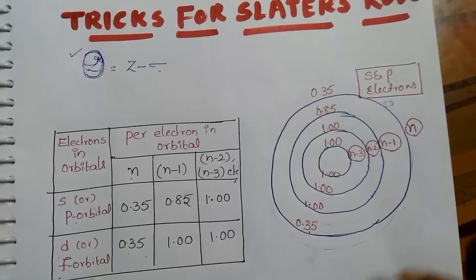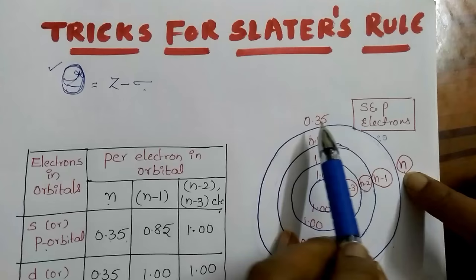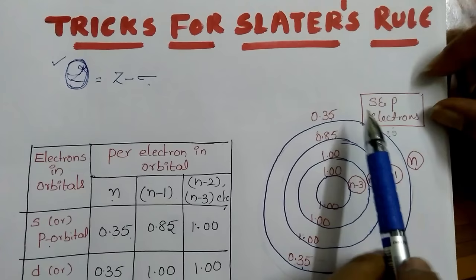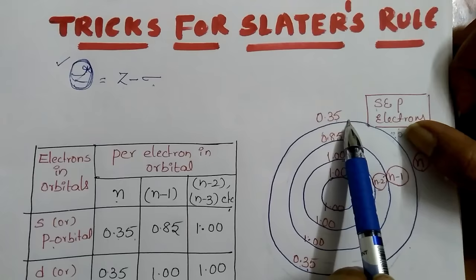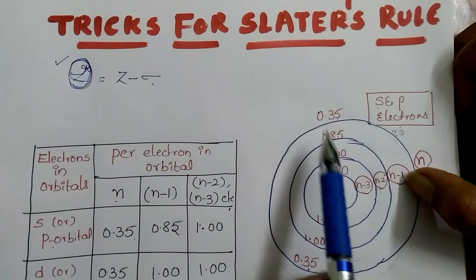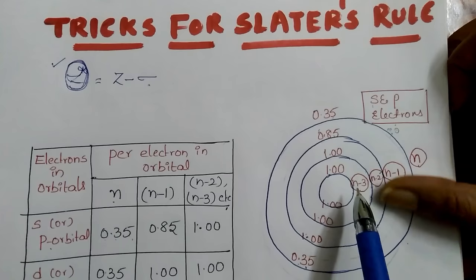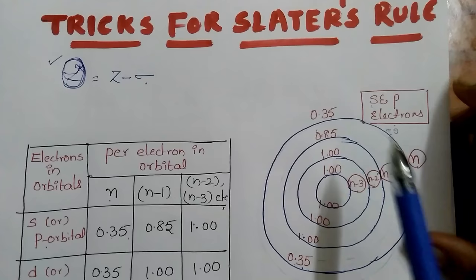For S and P electrons: if an electron is present in the N shell, its contribution is 0.35 per electron from all other electrons in the same shell. If the electron is present in the N minus 1 shell, then its contribution is 0.85. If it is present in N minus 2 or further inner shells, its value is 1.